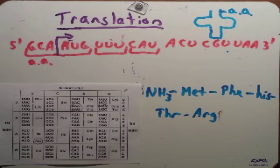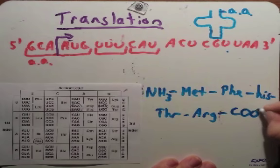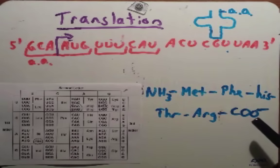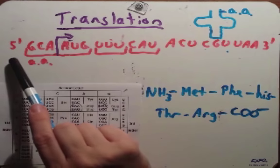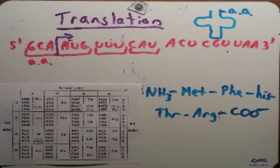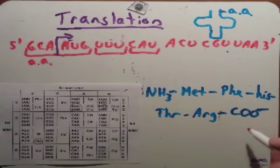Just like we began with an NH3 amino group, we end with something unique too: a carboxyl group, C-O-O-minus. These are important because they distinguish what the beginning of the amino acid sequence is and what the end is — just like our RNAs begin with 5' and end with 3'. Remember there will be a lot of extra sequence in the 3' untranslated region, but we stop at the stop codon.